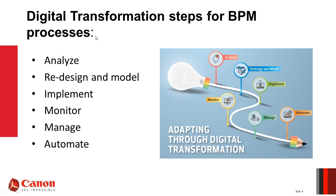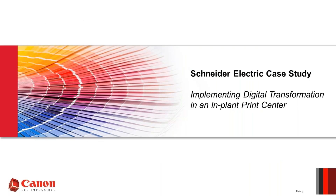Like any other process, when looking at how to adapt to new digital printing solutions and workflows, there's a standard process you really need to follow: analyze what you're doing today, determine what you'll need for the future, then start to look at redesigning and developing the correct solutions for your operation, implementing those solutions, and then continuing to monitor them and look for ways to automate the process. With that, I'll turn it over to Chris to talk about Schneider Electric, and then I'll come back in a few minutes to explain how we helped them with our services to redesign and analyze their operations.